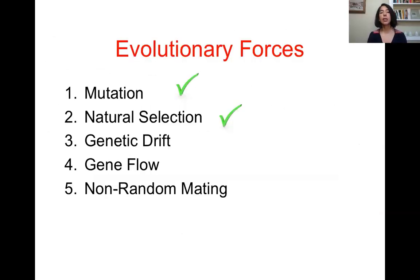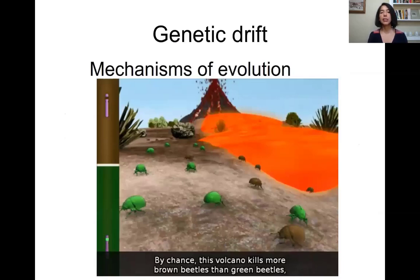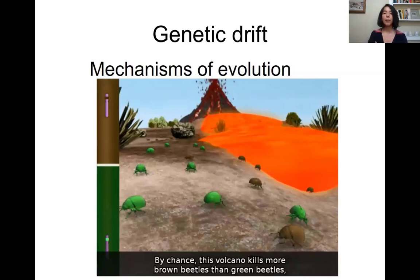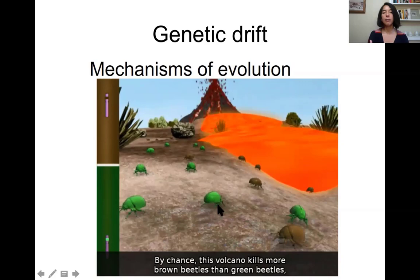Now let's go over genetic drift. Genetic drift happens by chance — we are not invoking natural selection to explain it; it's more about random events. In this figure, a volcano erupting happened to kill more brown beetles because they were wandering in higher numbers in the area where the lava passed. There is nothing related to an adaptive trait conferring more reproduction or survival — it's just about being lucky, being at the right time in the right place. This is the idea of genetic drift.